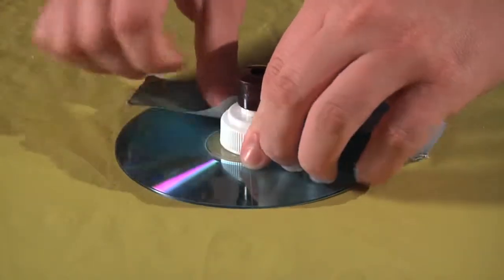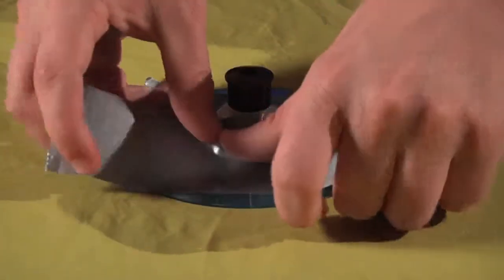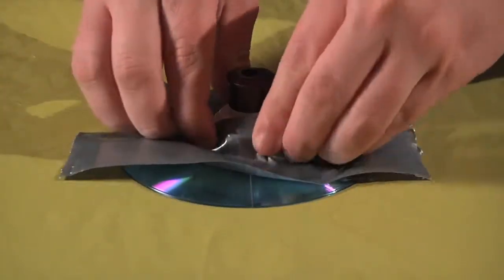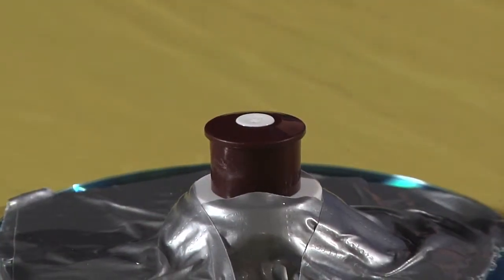If you're using duct tape, place the bottle top around the center of the disc and tape it down making sure no air can escape. Make sure the bottle top is closed so that no air can get out.